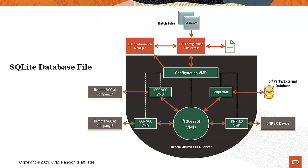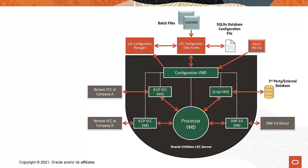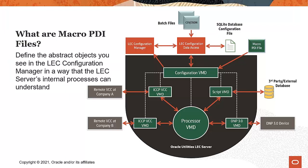Back to our conceptual map of Oracle Utilities LEC Configuration Manager — this is the Configuration SQLite database configuration file. Along with any batch files, this file defines your LEC Server configuration. So you can turn off your LEC Server, and when you turn it back on, the configuration information in this file will be used by the LEC Server. You'll also see Programmable Data Interface, or PDI, macro files. PDI macros define the abstract objects you see in the LEC Configuration Manager, for example nodes and connectors, in a way that the LEC Server's internal processes can understand. They're needed to run your LEC configuration.